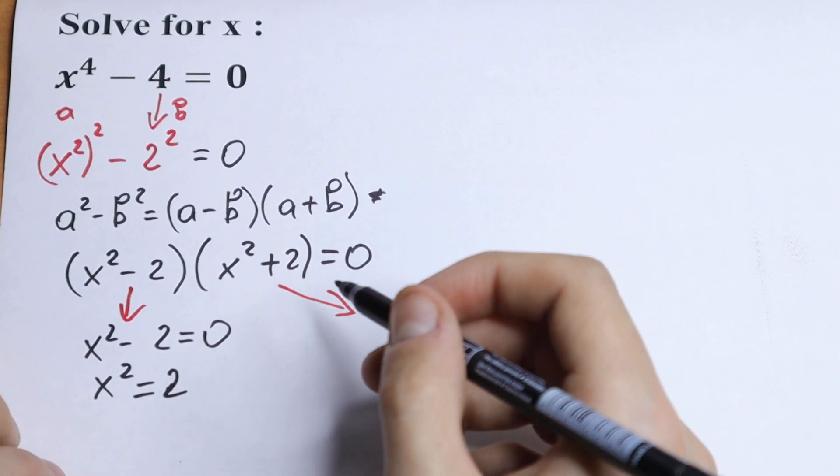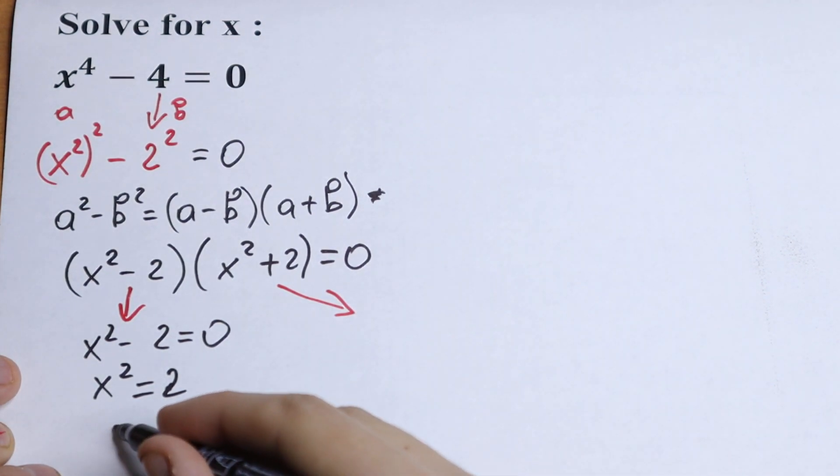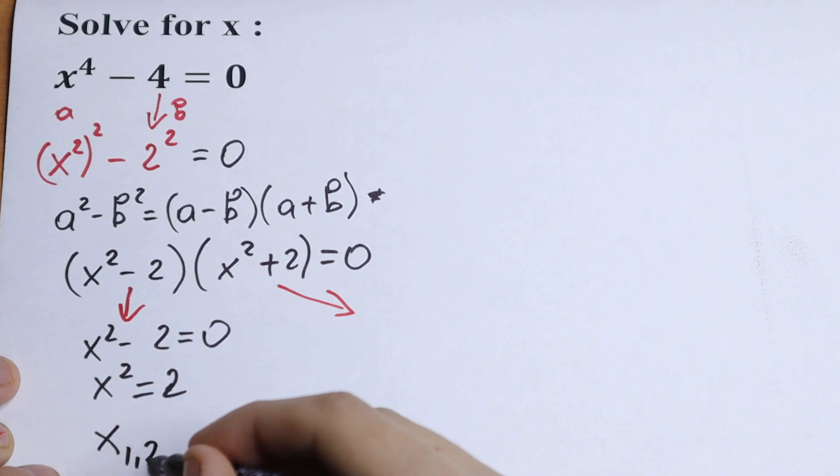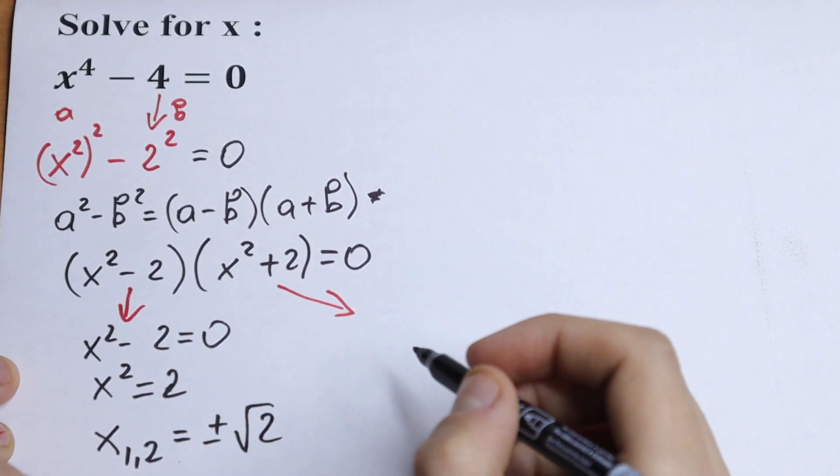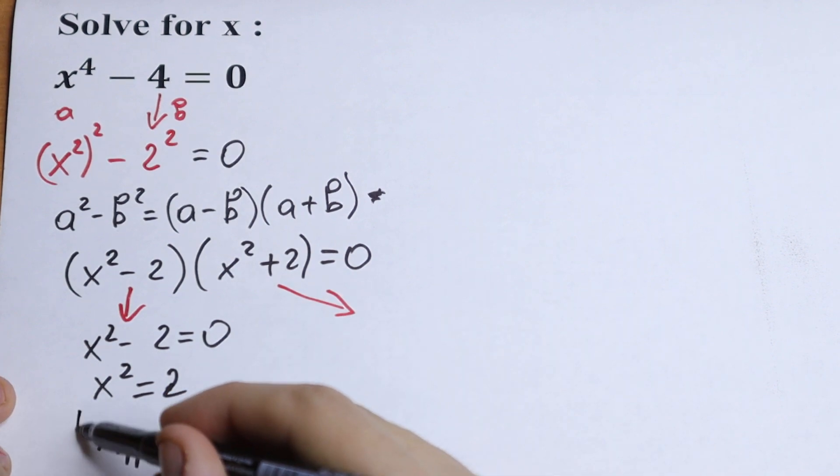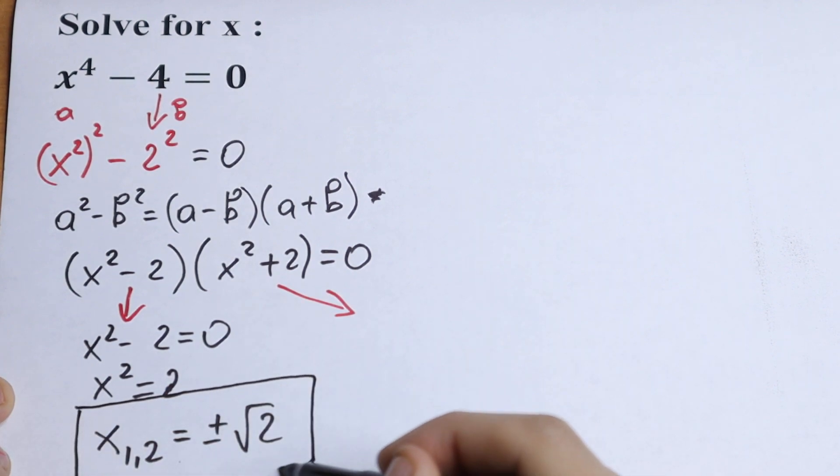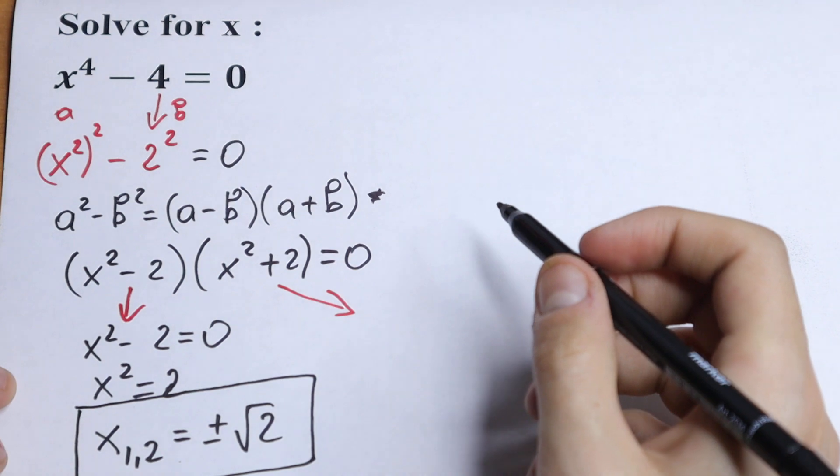Taking square root from both sides and we will have our x first and second equal to plus minus square root of 2. And as you can see this will be our real number root.